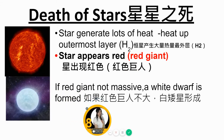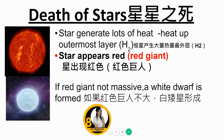If the red giant is not massive, a white dwarf is formed.